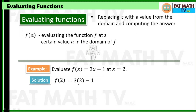Then you compute the answer. 3 times 2 is 6, and 6 minus 1 is 5. Therefore, f of 2 is 5. So the value of f of x equals 3x minus 1 at x equals 2 is 5. If you are evaluating functions, just replace the x with the value you are asked to evaluate.